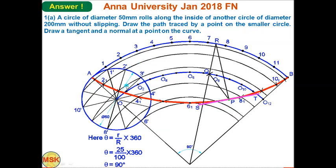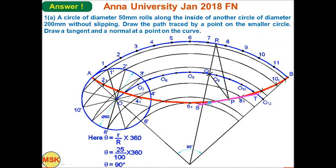Follow the same procedure for points 3, 4, 5, 6, and so on, until it reaches point B after one full rotation of the smaller circle. Then join all the cutting points freehand in a single stroke — that is the path traced by a point on the smaller circle, which is the hypocycloid. That completes the first part.